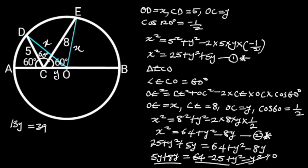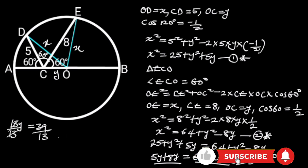So we are left with 13Y is equal to 39. Dividing through by 13 will give us Y is equal to 3.